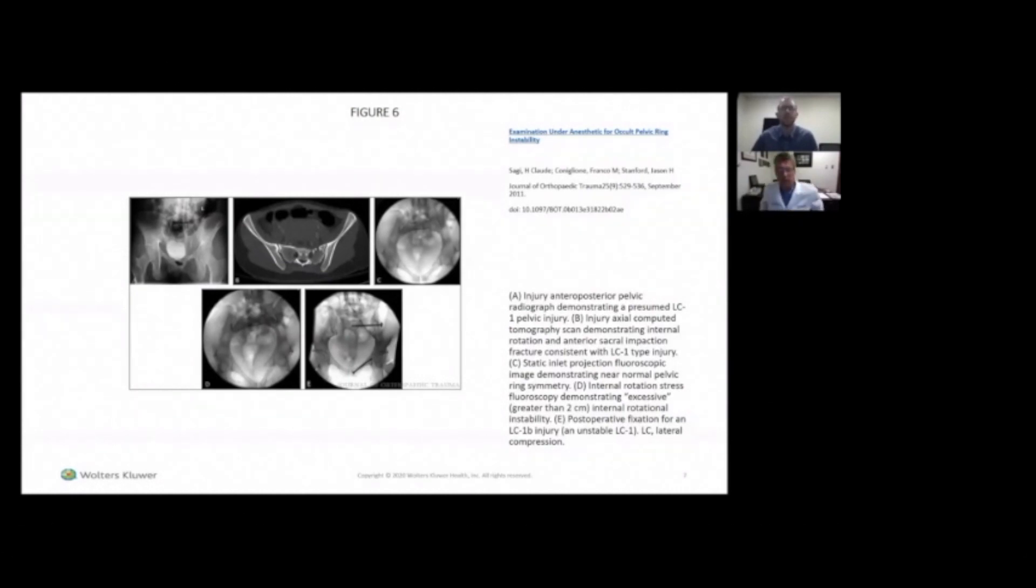What would be really nice to know is that if you could take all of these same injuries, you give everybody an EUA, and then you treat some operatively and some non-operatively, and then you see where they heal, and then you figure out what their functional limitations, problems, complications, malunion, nonunion rate is, and see if there's any correlation to that with the EUA.